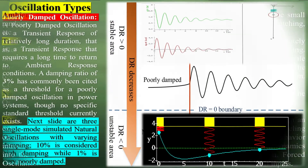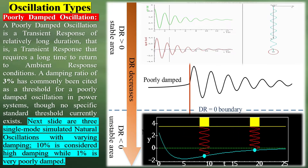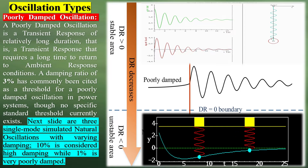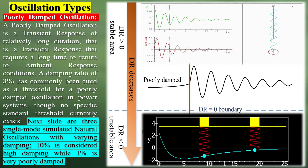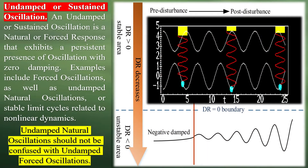Oscillation types by damping. Poorly damped oscillation: a poorly damped oscillation is a transient response of relatively long duration — that is, a transient response that requires a long time to return to ambient response conditions. A damping ratio of 3% has commonly been cited as a threshold for a poorly damped oscillation in power systems, though no specific standard threshold currently exists. 10% is considered high damping, while 1% is very poorly damped.